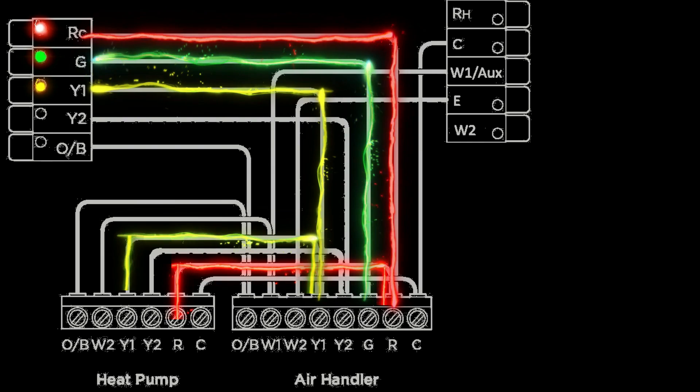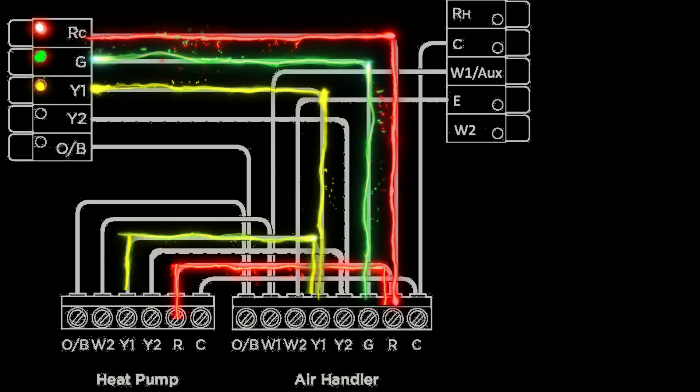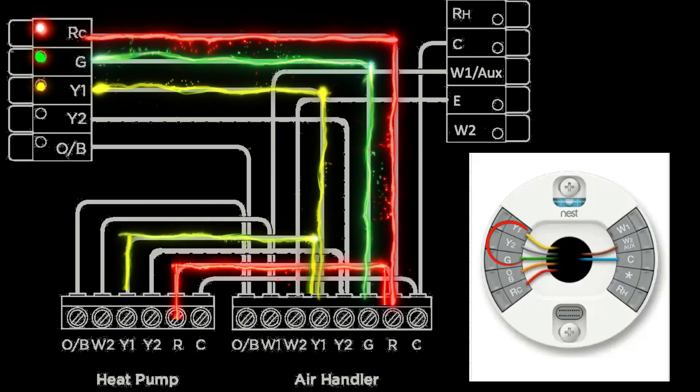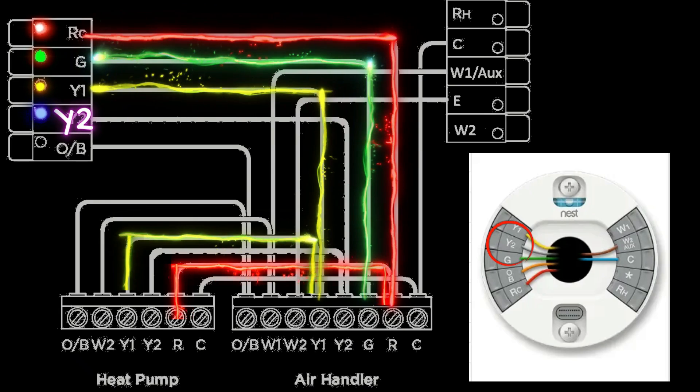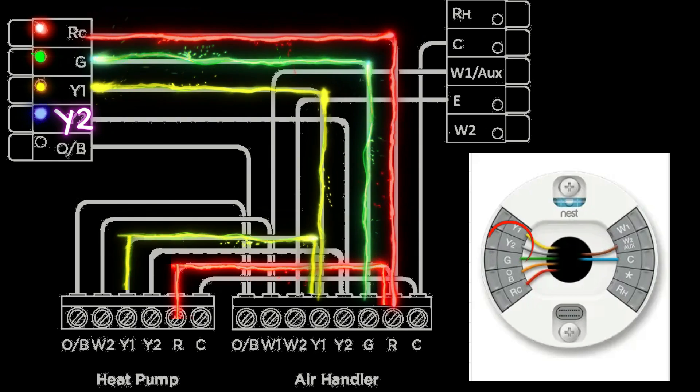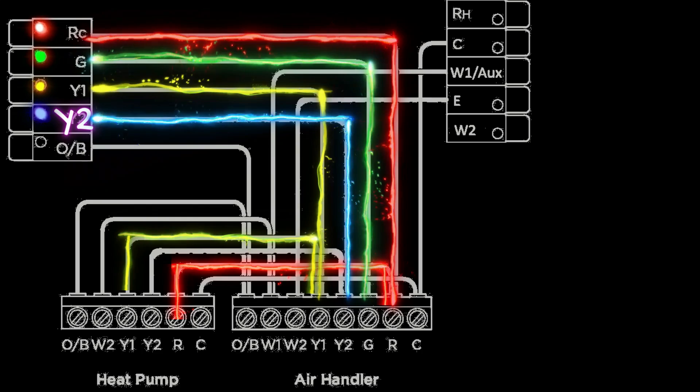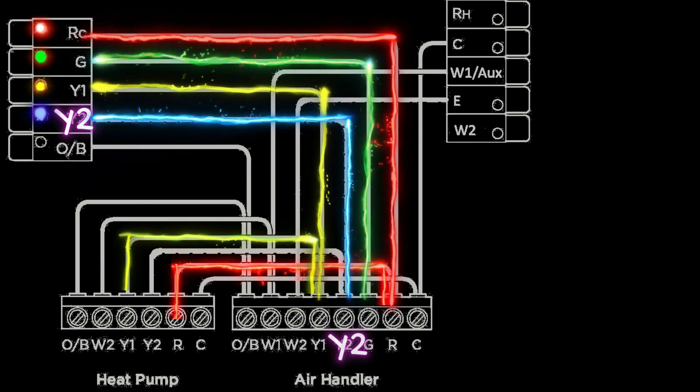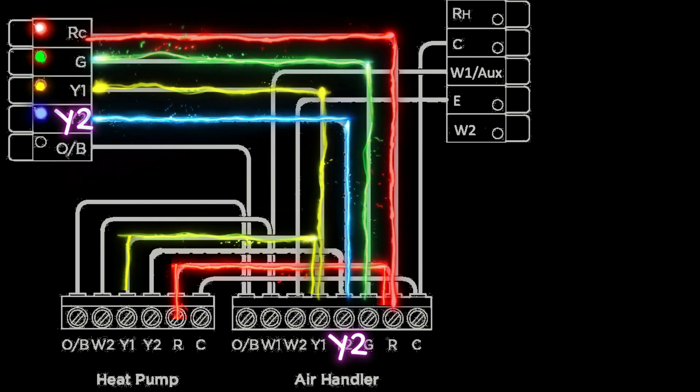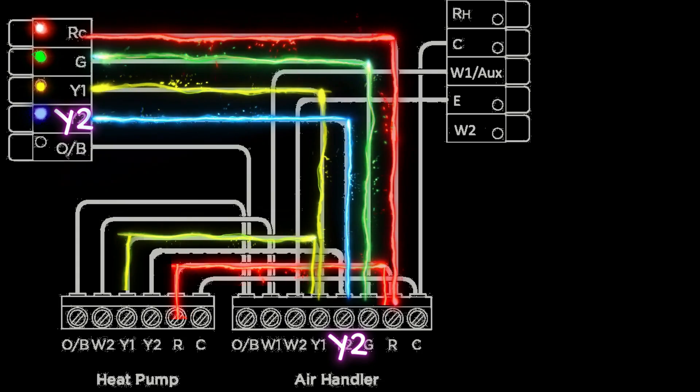Either way, when the thermostat activates second stage, it is going to activate the Y2 terminal. Now this 24 volts is going to leave the Y2 terminal on the thermostat, usually on a blue wire, and it's going to go to the Y2 terminal on the control board in the air handler.